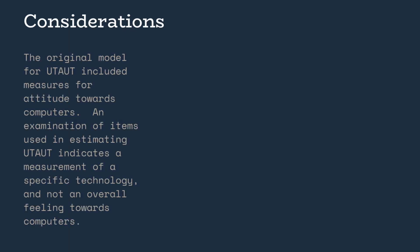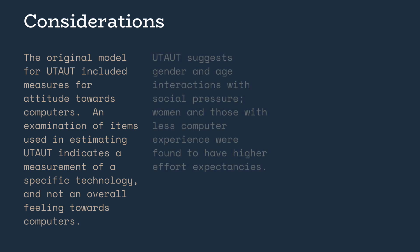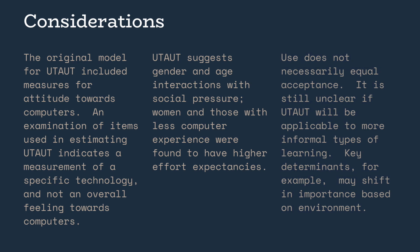The original model for UTAUT included measures for attitude towards computers. An examination of items used in estimating UTAUT indicates a measurement of specific technology and not an overall feeling toward computers. UTAUT suggests gender and age interactions with social pressure. Women and those with less computer experience were found to have higher effort expectancies. Use does not necessarily equal acceptance. It is still unclear if UTAUT will be applicable to more informal types of learning.